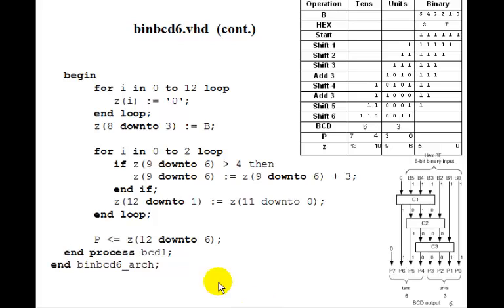Now, in the architecture, we have begin. You remember the first thing we have to do is set Z to 0. Well, we can do that with this little for loop. For i in 0 to 12 loop, Z goes 12 down to 0. Z(i), remember Z is a variable, so we got colon equals 0. So you go through here, setting each bit in Z equal to 0.